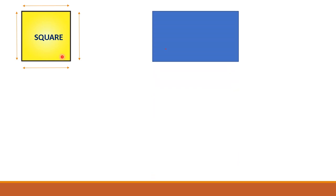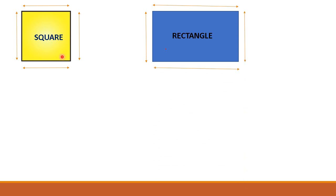Next, rectangle. Rectangle has 4 sides: 1, 2, 3, 4. And 4 corners: 1, 2, 3, 4. And opposite sides are equal. It is also a closed shape.